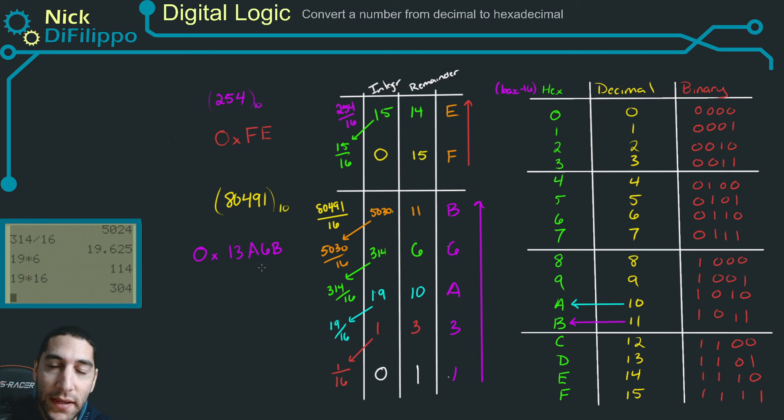So you're going to divide the number by 16, get the integer and the remainder, figure out what your remainder is in a decimal to hexadecimal conversion, and continue those steps until you get to a remainder of zero. And then write your hexadecimal value in the reverse order.